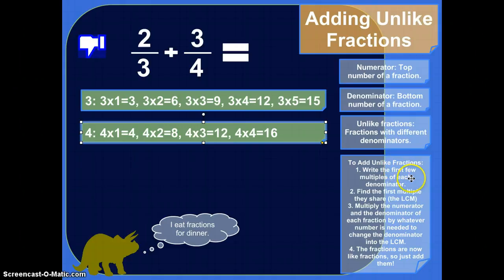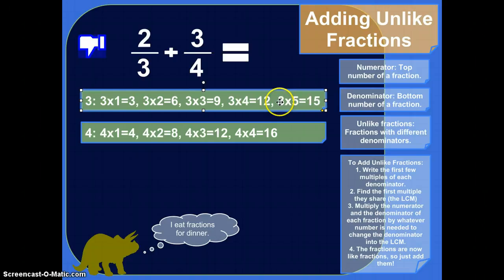So step two. So step one is first find the first few multiples of each denominator. So we did that. Here are the multiples of three. The first five of them. Here's the first four multiples of four. Step two is find the first multiple they share in common. And that's called the least common multiple or LCM.